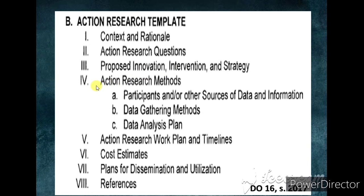Part Four of the action research proposal is Action Research Methods. This has three sub-parts: A — Participants and/or other sources of data and information; B — Data Gathering Methods; and C — Data Analysis Plan, where you can write the statistical tools for your research.